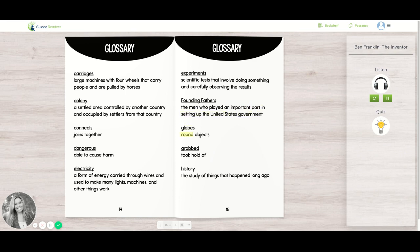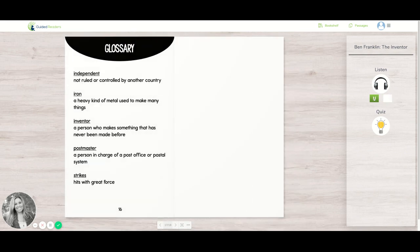Globes: Round objects. Grabbed: Took hold of. History: The study of things that happened long ago. Independent: Not ruled or controlled by another country.